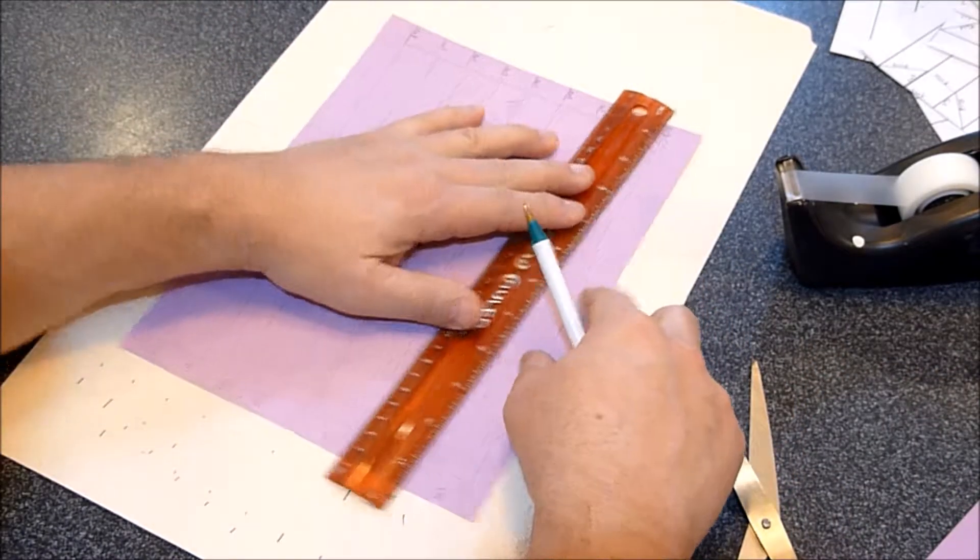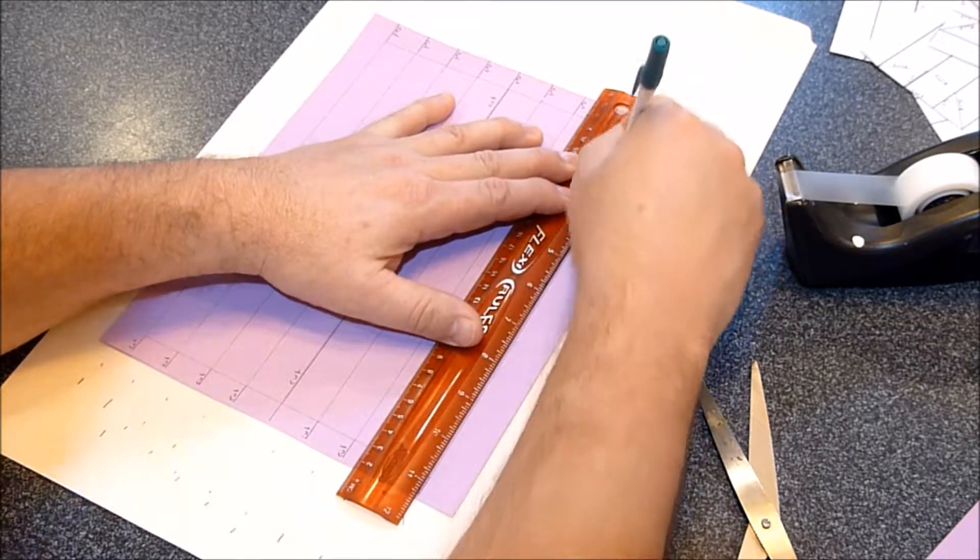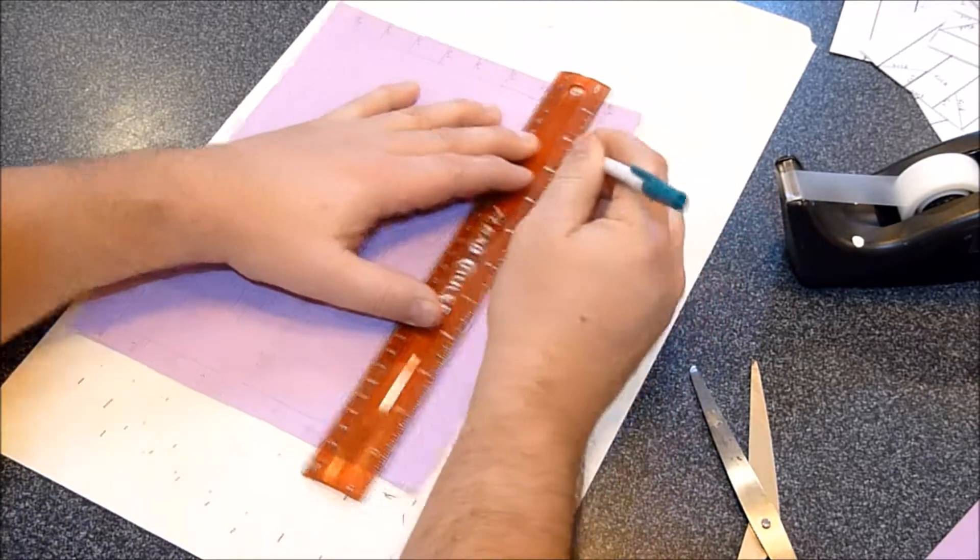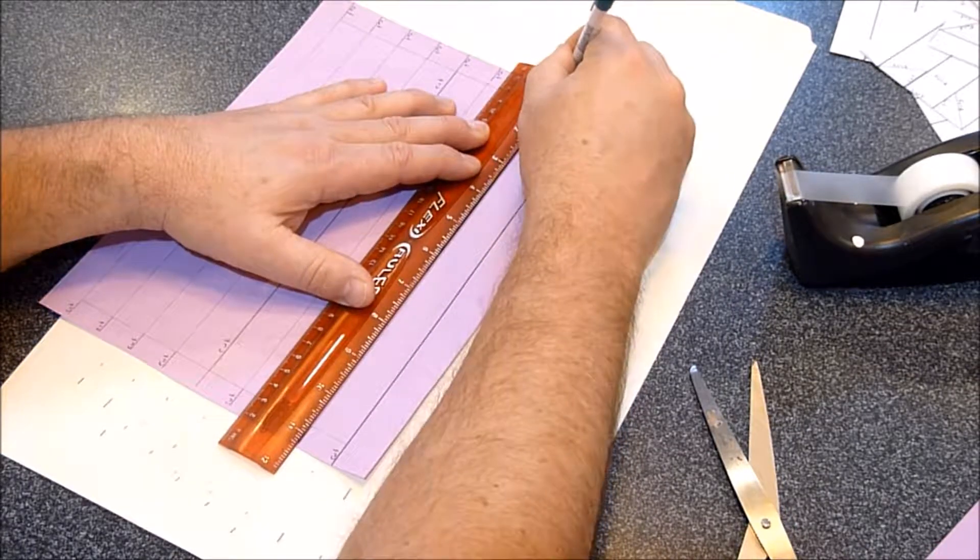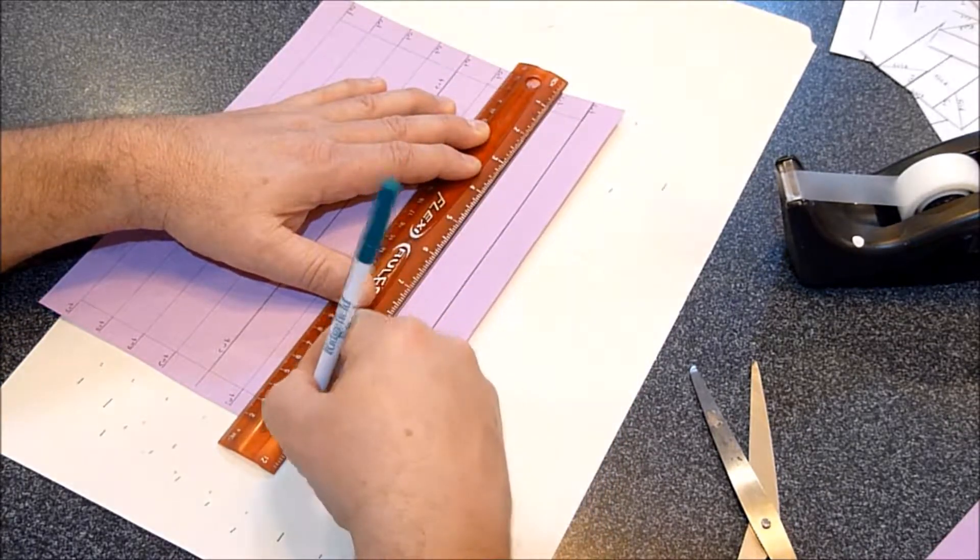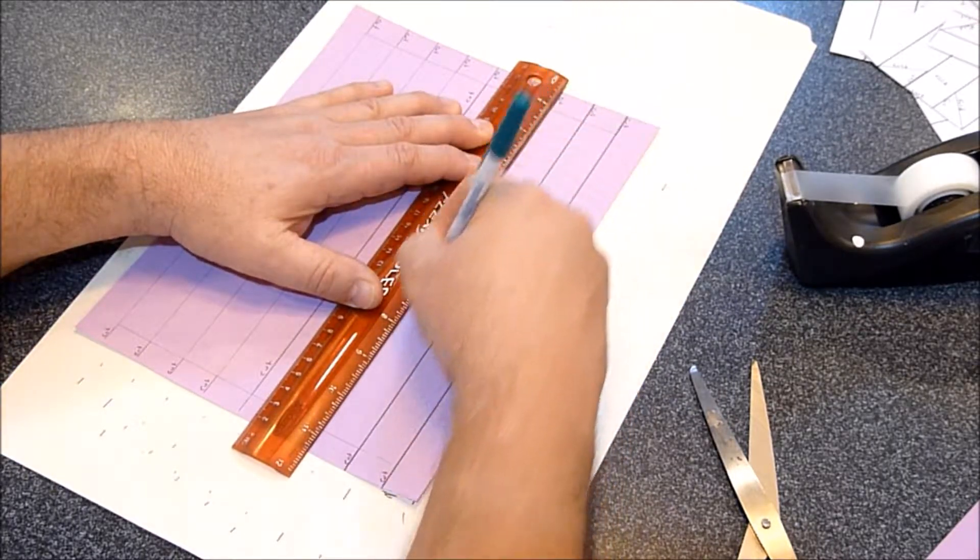So you score along the traced lines, very similar to all the other folding. The scoring really makes a difference because it really makes a nice straight fold.